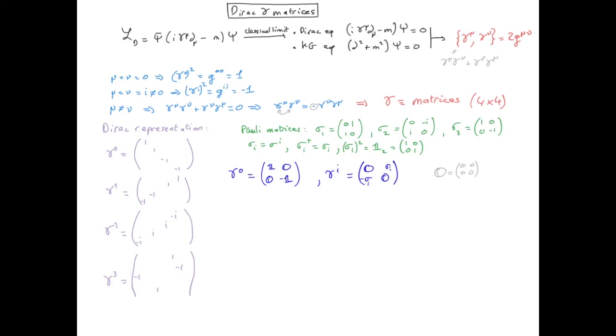Finally, we note that only gamma naught is Hermitian, while gamma one, gamma two and gamma three are not Hermitian. This is obvious from their explicit expression.